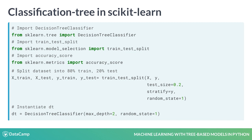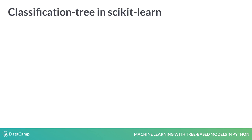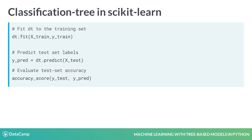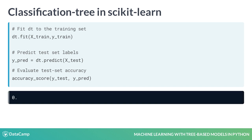Note that the parameter random_state is set to 1 for reproducibility. Then, call the fit method on dt and pass X_train and y_train. To predict the labels of the test set, call the predict method on dt. Finally, print the accuracy of the test set using accuracy_score.